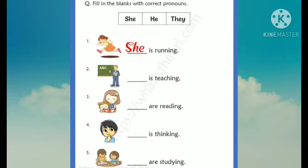Next, the next sentence is blank is teaching. Look at this picture. A man is teaching. A man or a boy is teaching. In place of a boy, we use he.